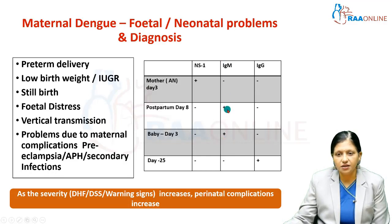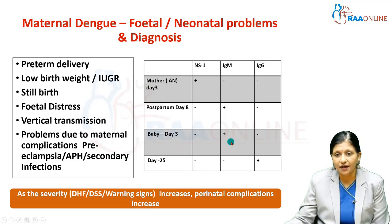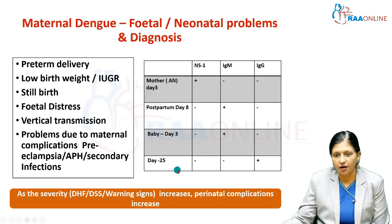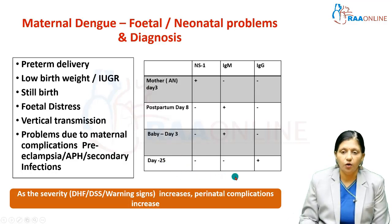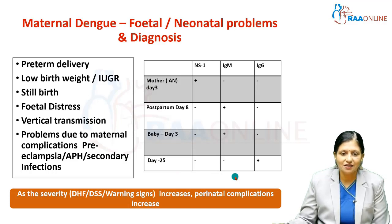If the baby has IgM positive, that means the baby has acquired dengue infection from the mother. We should also check these antibodies on day 25 after delivery to understand whether the antibodies present in the baby were from the mother or represent a new newborn dengue infection.